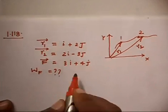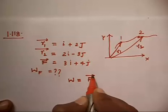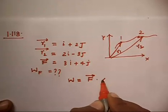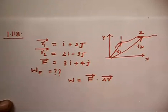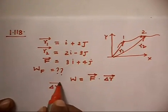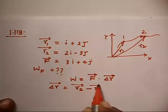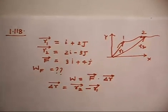Now this is very simple. In this case, work done is nothing but F dot dr, or I can write delta r. And delta r is nothing but r2 minus r1. So vector r2 minus vector r1 will give you delta r.